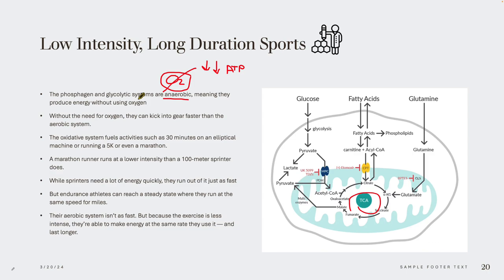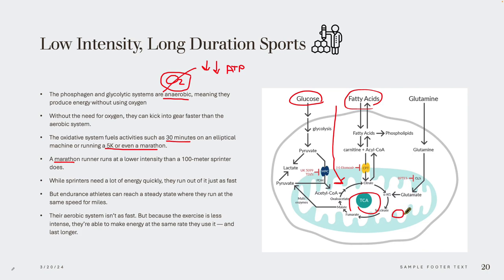Marathon runners and people exercising longer than 30 minutes will use this oxidative pathway, sending glucose and fatty acids into the mitochondria using oxygen to create lots of ATP. When sprinters need a lot of energy, they use the ATP-PC and anaerobic systems, because sprinting is high intensity and short duration. The intensity and duration of exercise determines which systems are used.